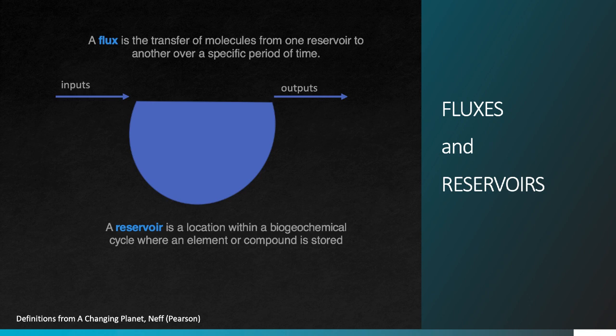Now a reservoir could be an actual reservoir with a dam and a big pool of water, but it might be something else. The reason this matters is that we as humans survive on both fluxes and reservoirs. In the case of water, we often depend mostly on regular fluxes in the form of rainfall or snowfall to replenish our supplies so that we have usable water when we need it.